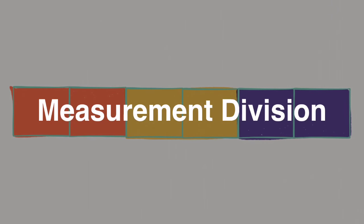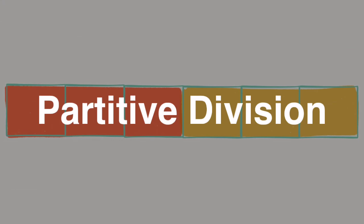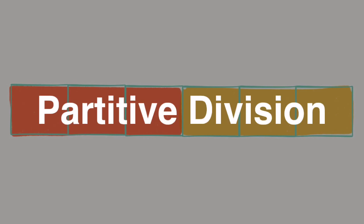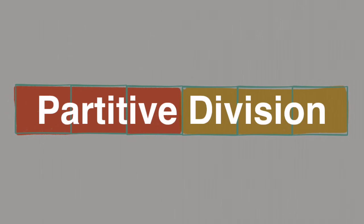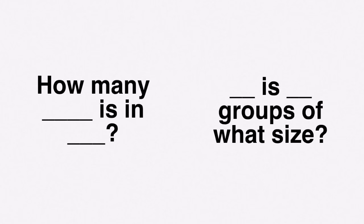Visually, measurement division looks like 3 groups, while partitive division looks like 2 groups. For one question we asked how many groups — which was 3 — and for the other we asked what is the size of the groups — which is also 3. The answers are the same. So for every division problem you can ask 2 different questions that will receive the same answer: how many [blank] are in [blank], or [blank] is [blank] groups of what size?